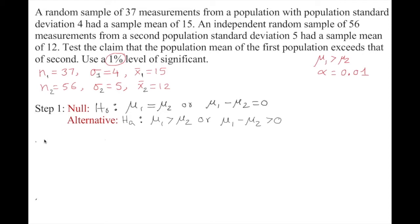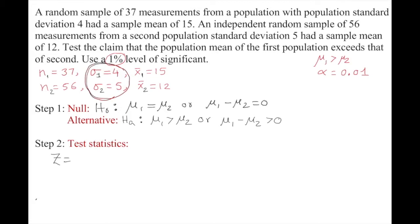Next, do we use a z-test or a t-test? Since the population standard deviations are known, we use the z-test. The z-statistic formula is: z equals the difference of sample means (x̄₁ minus x̄₂) minus the difference of population means (μ₁ minus μ₂), divided by the standard error.